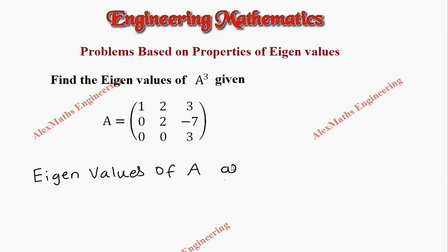Let's take the eigenvalues of A are lambda 1, lambda 2, and lambda 3. Now if you observe the given matrix, it is a triangular matrix where we find the elements present in the upper part of the triangle.